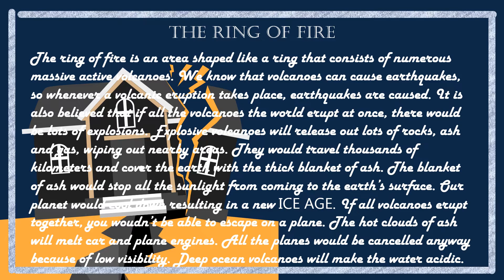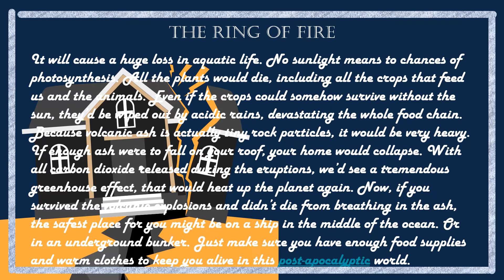With no sunlight, there would be no photosynthesis, and a new ice age would follow. You wouldn't be able to escape on a plane — hot clouds of ash would melt car and plane engines, and all planes would be cancelled due to low visibility. Deep ocean volcanoes would make the water acidic, causing huge loss in aquatic life. Without sunlight, all plants including crops would die, and volcanic ash — tiny rock particles — would be so heavy that if enough fell on your roof, your home would collapse.